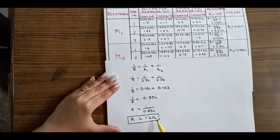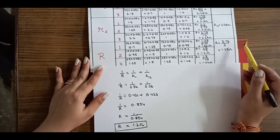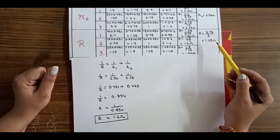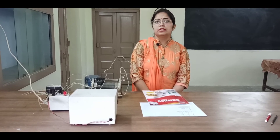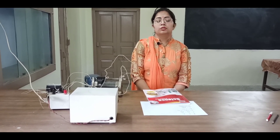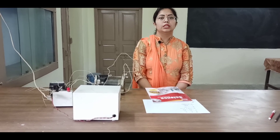So the value of the resistance when two resistors of 2.32 ohms and 2.36 ohms are connected in parallel, calculated by formula, is 1.2 ohms, and the value calculated experimentally is 1.25 ohms. The conclusion of this experiment is that within experimental error, the experimental value and the formula value are approximately the same. This verifies the formula: the reciprocal of equivalent resistance equals the sum of the reciprocals of all resistances connected in parallel. Thank you so much — I hope this activity was clear and you enjoyed it.